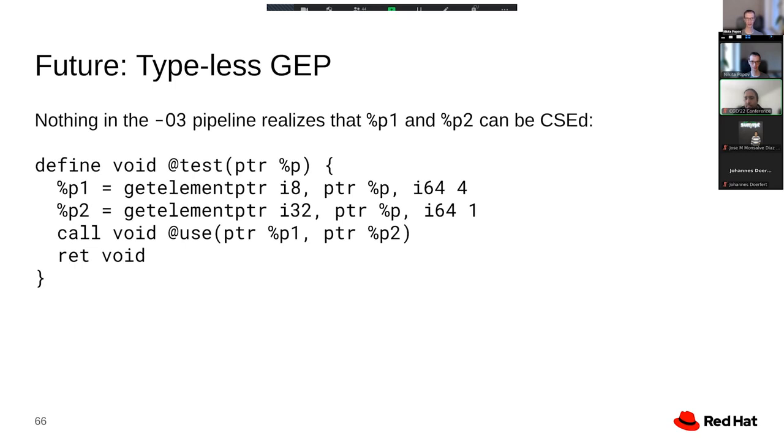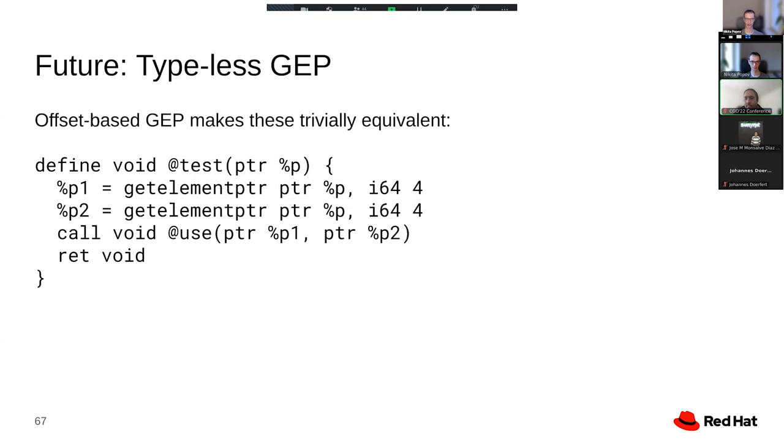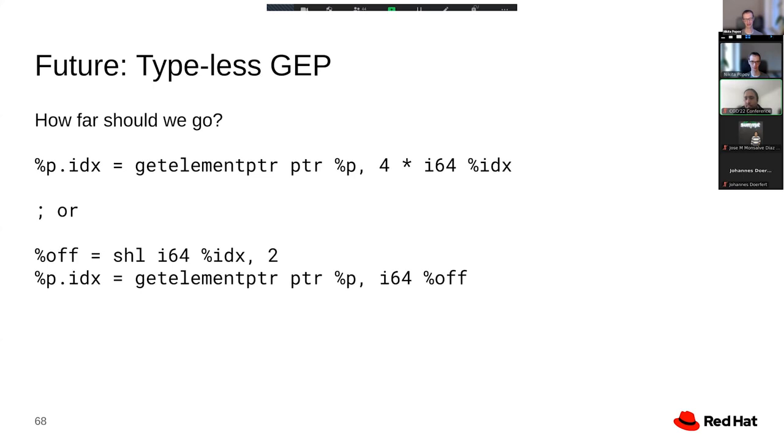If instead we drop the type from get element pointer and said that this instruction actually just takes a base pointer and an offset, then those instructions would be trivially equivalent. And once again, we would solve this equivalence problem by design, instead of solving it by doing extra work at every place that somehow processes these instructions. This is just a basic idea at this point. This is something I think we should do, but it's maybe not entirely clear how the technical details would look like.